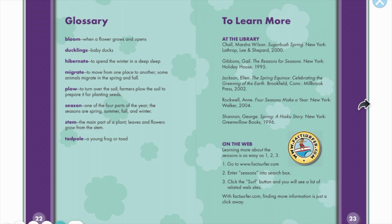Plow: to turn over the soil. Farmers plow the soil to prepare it for planting seeds. Season: one of the four parts of the year — spring, summer, fall, and winter. Stem: the main part of a plant; leaves and flowers grow from the stem. Tadpole: a young frog or toad.